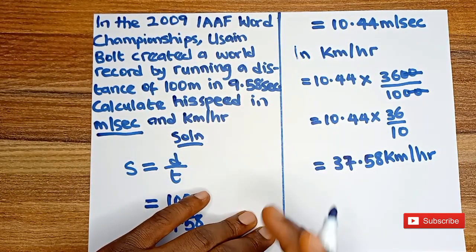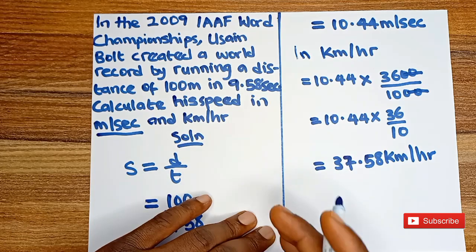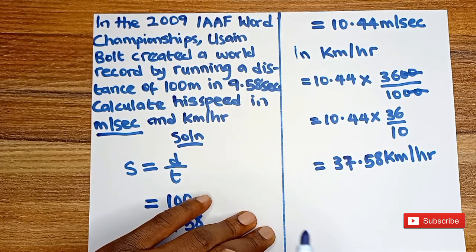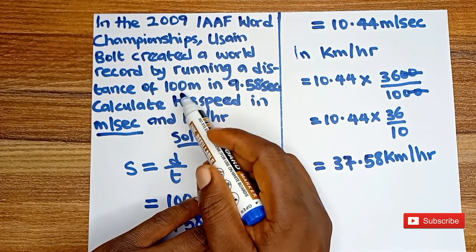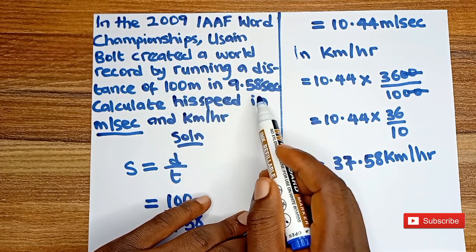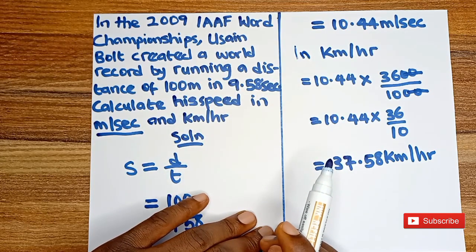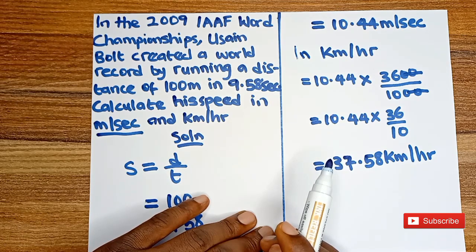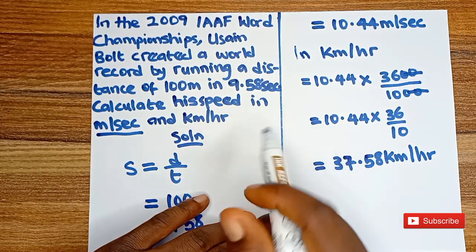So this is a simple way to calculate speed in meters per second and then in kilometers per hour, when we are given the values in meters and seconds. If you enjoyed this video, don't forget to like, share with your friends, and subscribe to this YouTube channel for more maths content. See you in the next video. Bye.